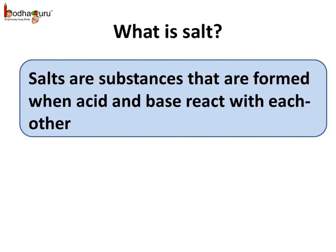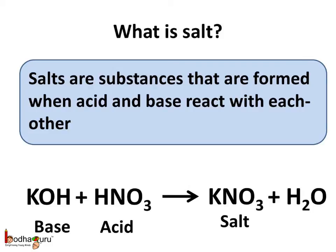To summarize what we learnt today — what is a salt? Salts are substances that are formed when an acid and a base react with each other in a neutralization reaction. For example, when potassium hydroxide (KOH), which is a base, reacts with nitric acid (HNO3), potassium nitrate (KNO3) and water are formed. So potassium nitrate produced here is a salt.